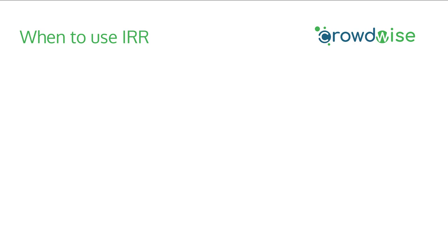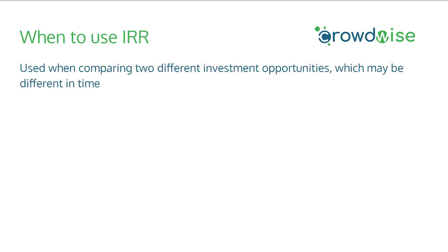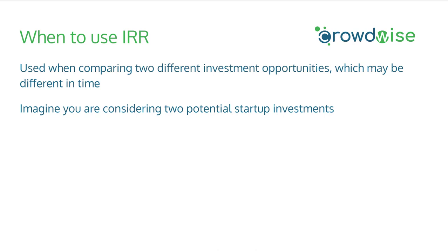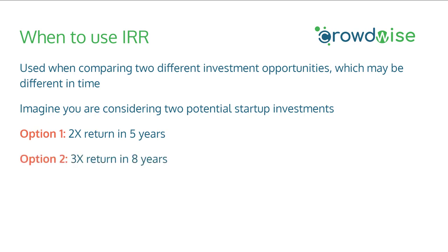So when do you use IRR versus exit multiples? IRR is best used when comparing two different investment opportunities which may have different timeframes of investment. Imagine you're considering two potential startup investments: option one is a startup with potential for a 2x return in five years, and option two is a startup where you foresee a potential 3x exit but it might take about eight years. Of these two startups — 2x in five years or 3x in eight — which is the better investment? Looking at the numbers like this, it's hard to tell, so we can bring IRR into the equation.